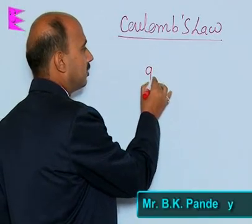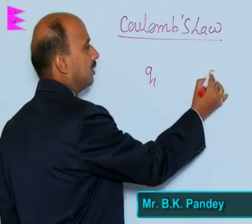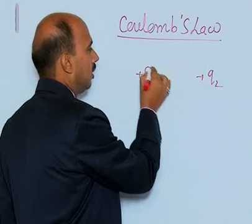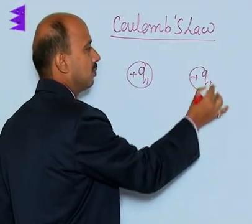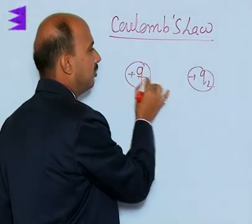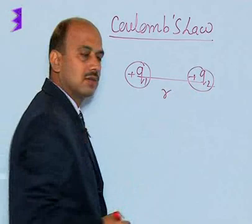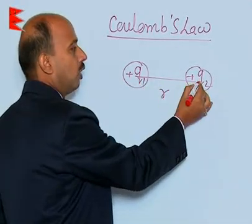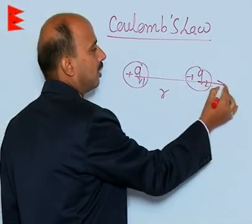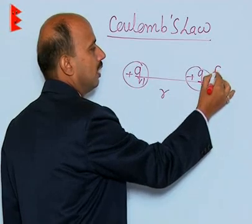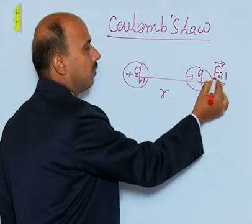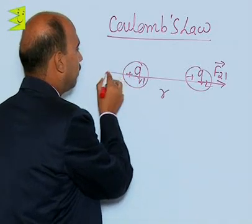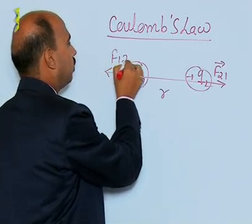Suppose you have taken first charge Q1 and another charge Q2. Both are positively charged and these two are point charges. The distance between their centers is R. This will apply a repulsive force on this — that is F21, force on 2 due to 1 — and here also the force is acting, F12, force on 1 due to 2.